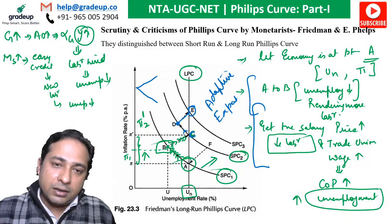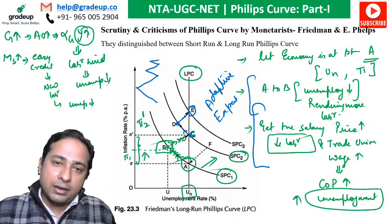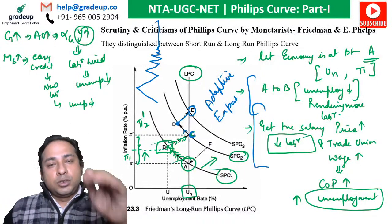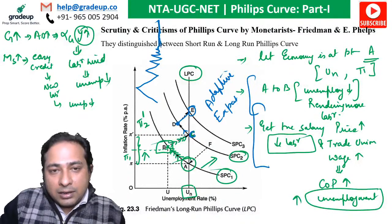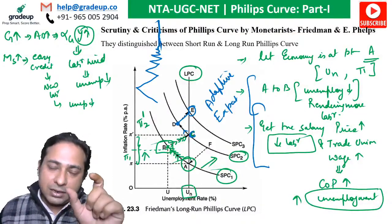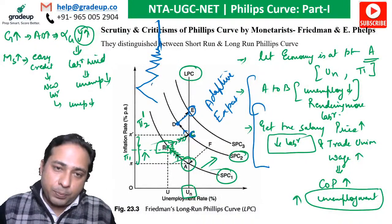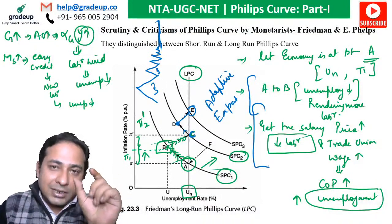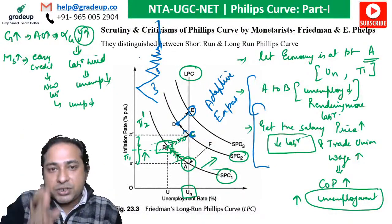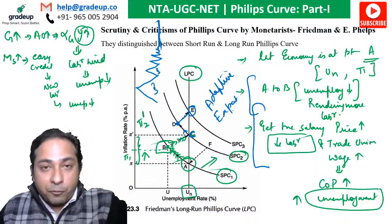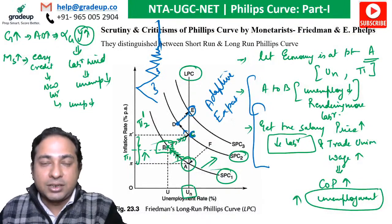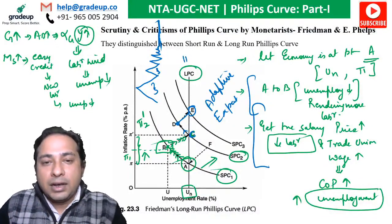This zigzag pattern — moving along a short-run Phillips curve, then shifting to a new higher short-run curve — keeps repeating. The peak of each zigzag diminishes over time and eventually traces out a straight vertical line. That vertical line is the long-run Phillips curve. So in the long run, because of adaptive expectations, there is no relationship between unemployment and inflation — the long-run Phillips curve is vertical.